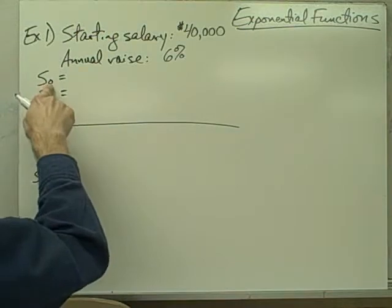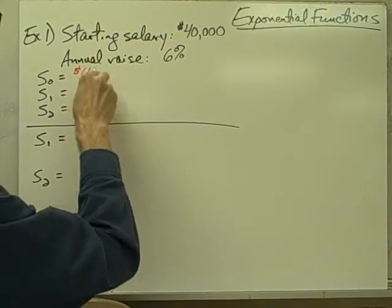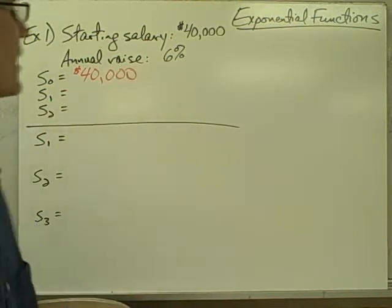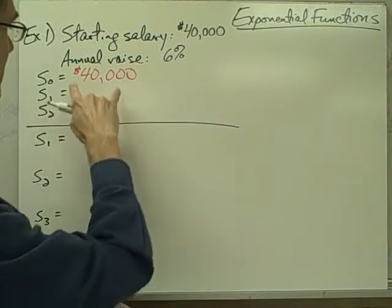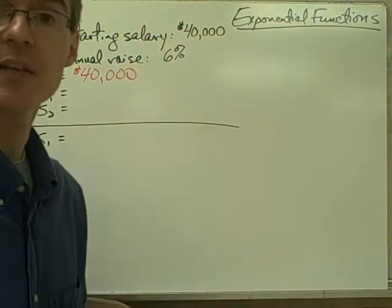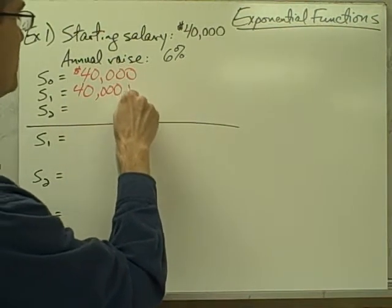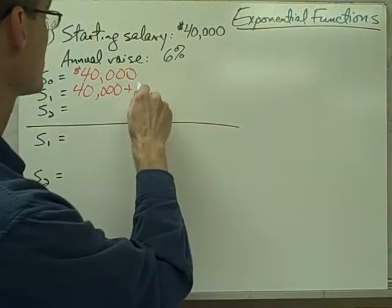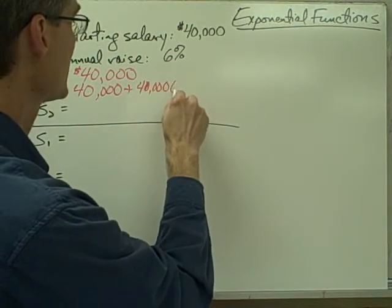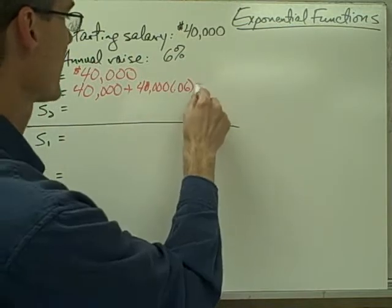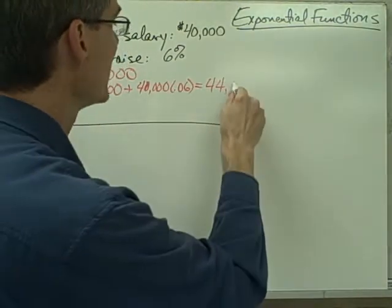When you first start working there — what we'll call year zero — your salary, S sub zero, is going to be $40,000. That's your initial salary. Your salary after one year, S sub one, is going to be $40,000 plus 6% of $40,000, written as 40,000 times 0.06. If we punch that into our calculator, we get $44,944.